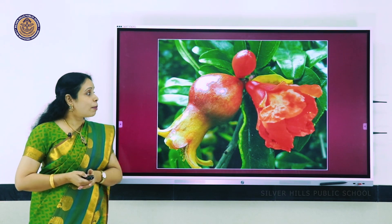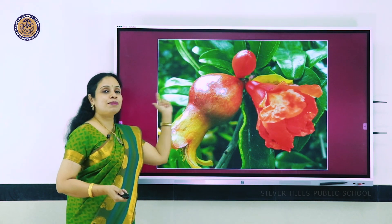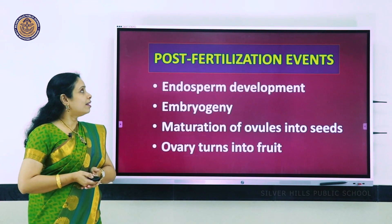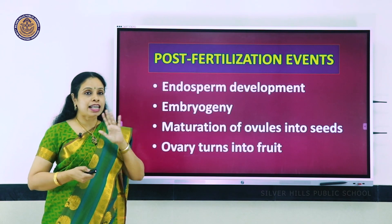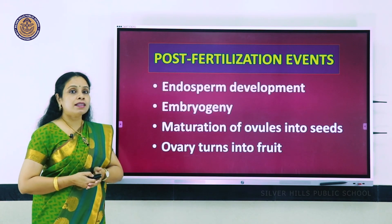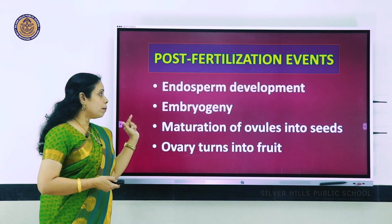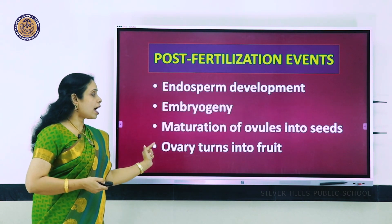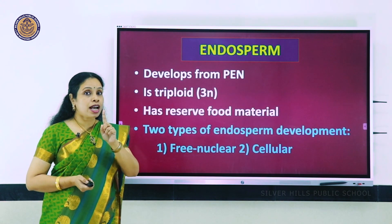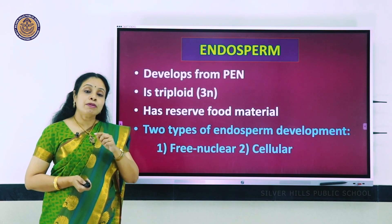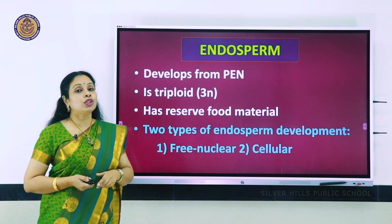You can see the pomegranate flower has turned into a fruit - the basal ovary part is becoming the fruit. The post-fertilization events are: endosperm development, embryo development, maturation of ovules into seeds, and the ovary turning into the fruit. The first event is endosperm development - before the embryo develops, the endosperm must form so that food is ready for the developing embryo.